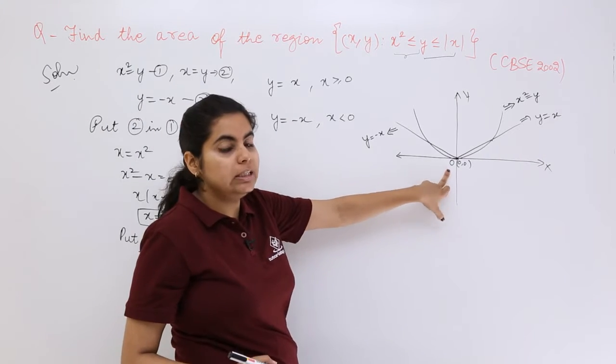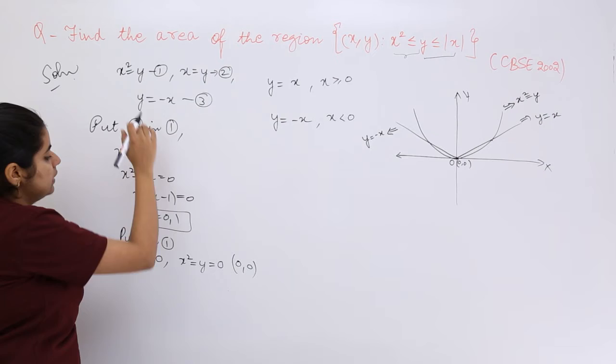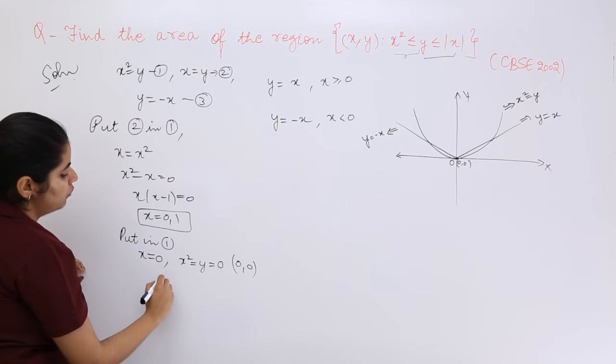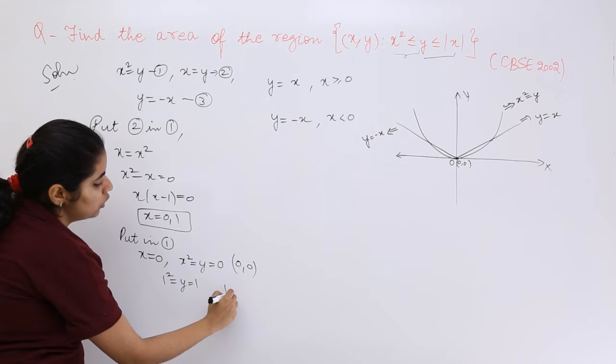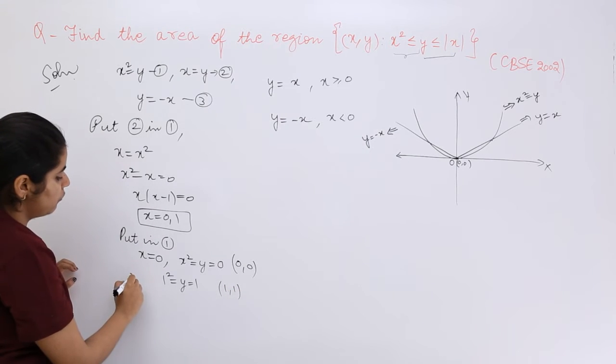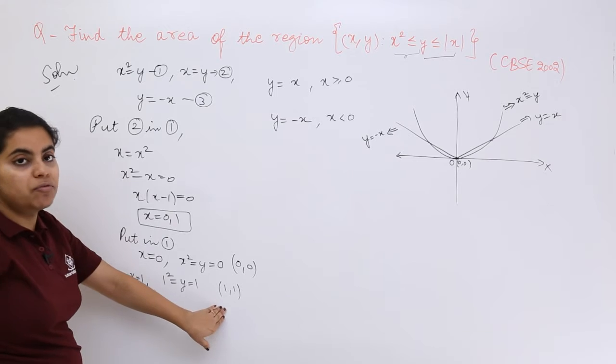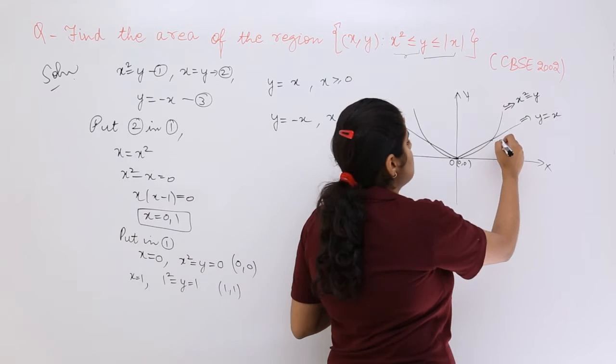What about the other thing? I have 1. So 1² = y, that means 1. So (1,1). When my x = 1, (1,1) would be the point of intersection.